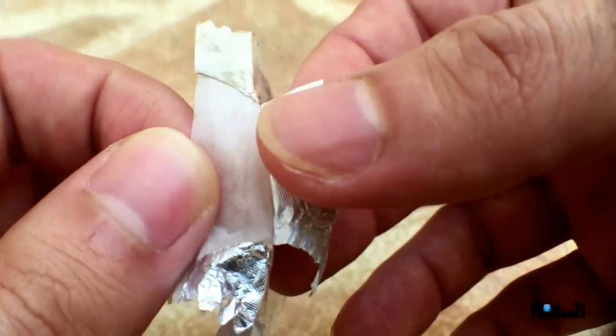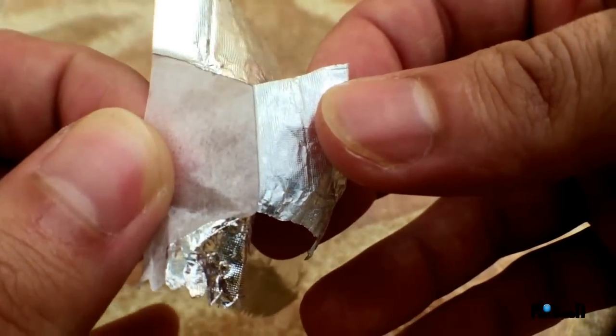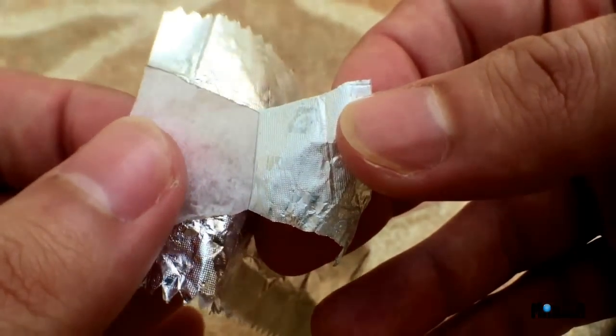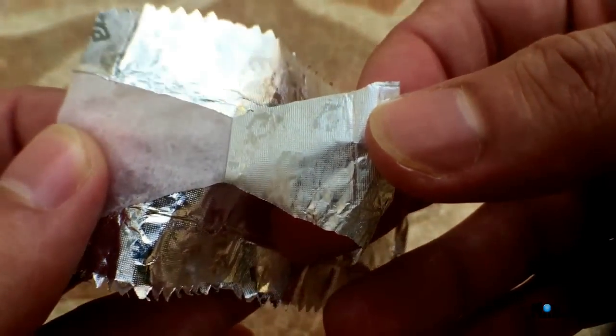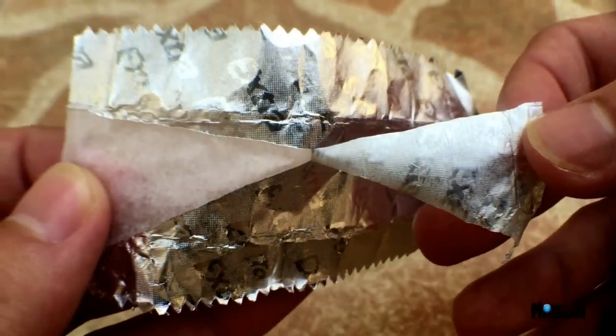I think this happens because the gum wrapper is basically made of a very thin metal foil stuck to wax paper. The current flowing through the wrapper heats the thin center to the extent that it sets the wax paper on fire.